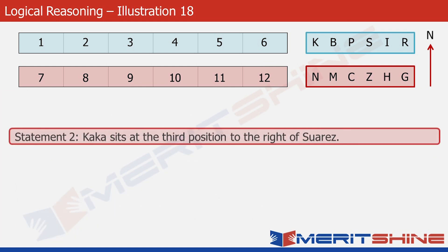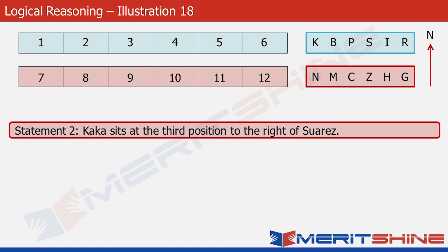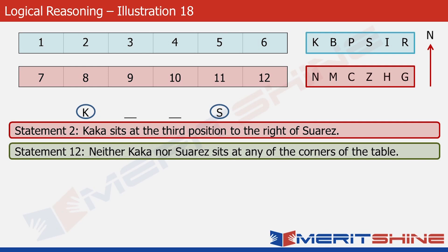So let's go back to statement 2: Kaka sits at the third position to the right of Suarez. We know that Suarez has to occupy one of the positions from 1 to 6 since he is facing south. Now applying statement 12 — neither Kaka nor Suarez sits at any of the corners — Kaka cannot sit at position 1 and Suarez cannot sit at position 6. So the only positions left for Kaka and Suarez are 2 and 5 respectively. Let's put them there.